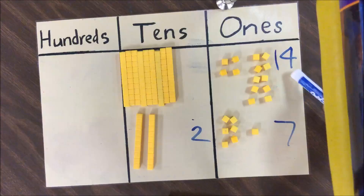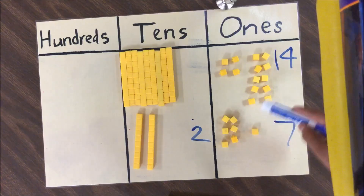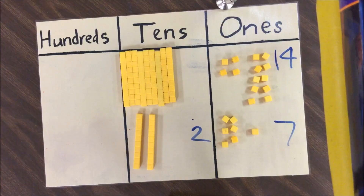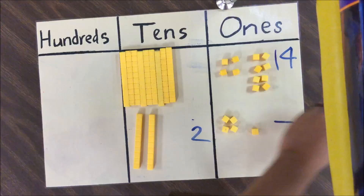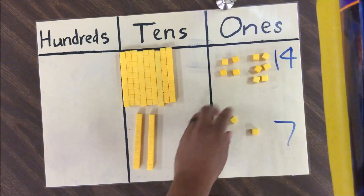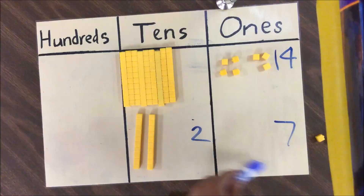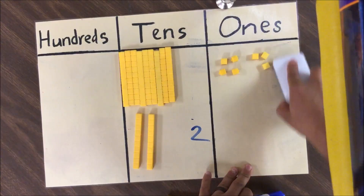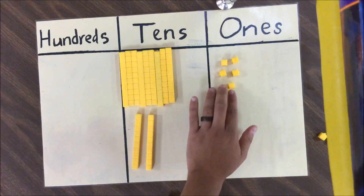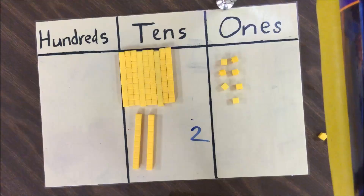Now the ones place changes from 4 to 14, and we can subtract 7 from 14. Because we're in third grade we know how to skip count, so to make it quicker I'll grab 2 from the 7 and 2 from the 14, then 2 more from the 7 and 2 more from the 14, then 2 from the 7 and 2 from the 14, and finally 1 from the 7 and 1 from the 14. Now we count what's left: 2, 4, 6, 7 pieces — so we write 7 in the ones place.